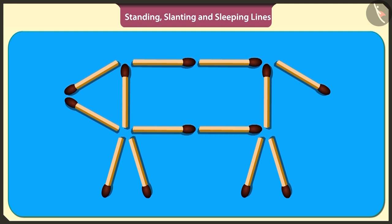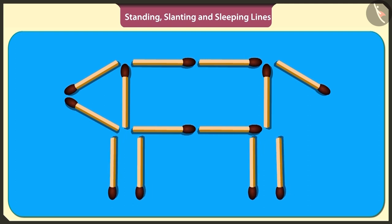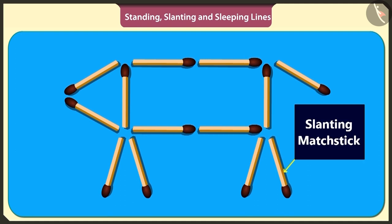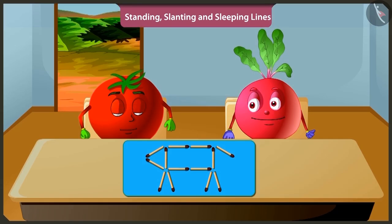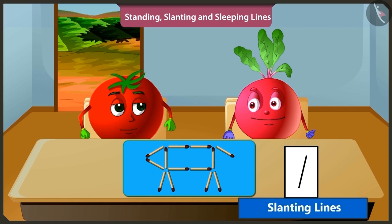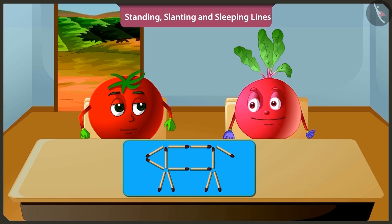Hey, to make the legs of the dog, the matchsticks are not standing but slanting. I didn't understand. Bitu, even if the line is slightly oblique, it is called slanting. Yes. Understood. But where is the game?